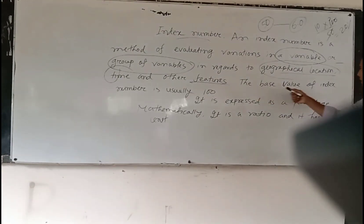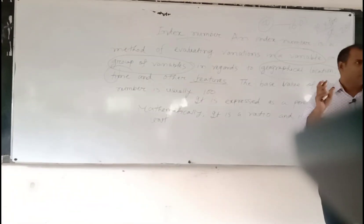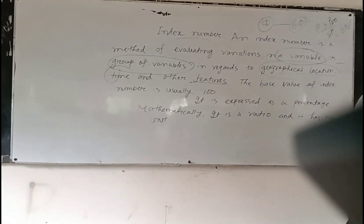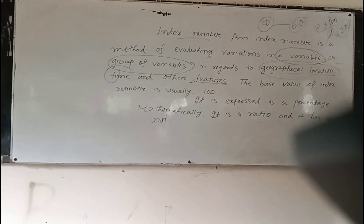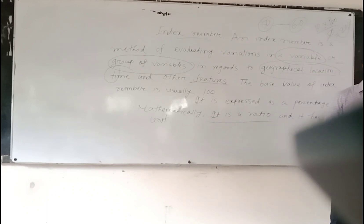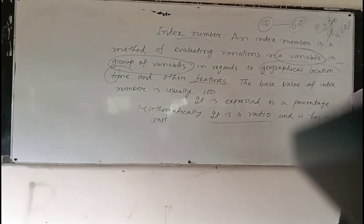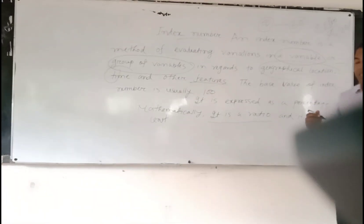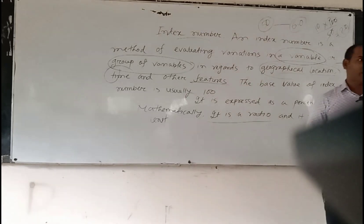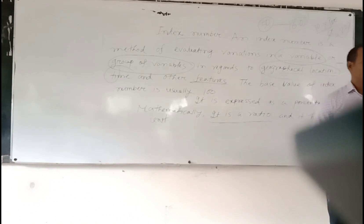The base value of the index number is 100. We have to estimate 100. This is the percentage — that is the percentage. This is one kind of ratio. It is a ratio, right? Because we compare the ratio of 1 and 1, and we compare the ratio. So this percentage is good, it is a ratio. It has no unit. That's why we will be talking about the index number.